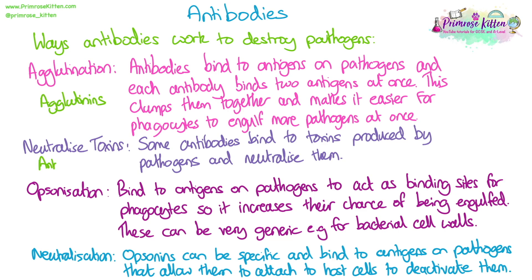So those are the processes, and these are the names of the types of antibodies. Agglutinins are the type that perform agglutination, antitoxins are the ones that neutralize toxins, and opsonins perform opsonization — and also neutralization, depending on the type of opsonin, as there's a group of them.